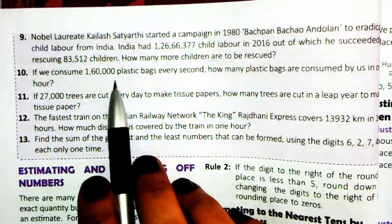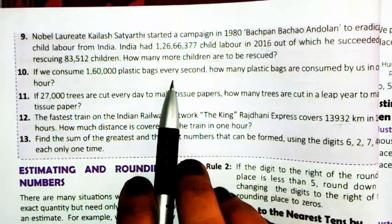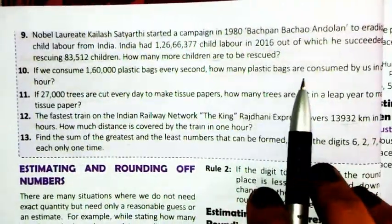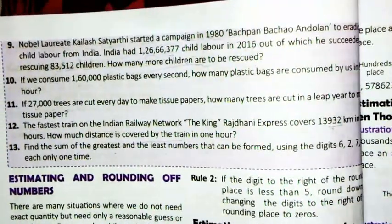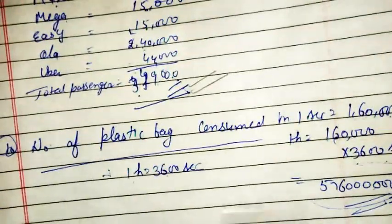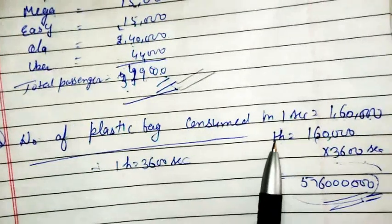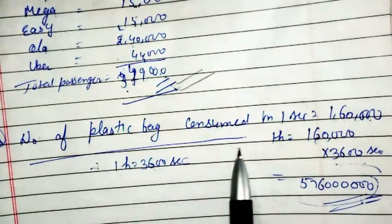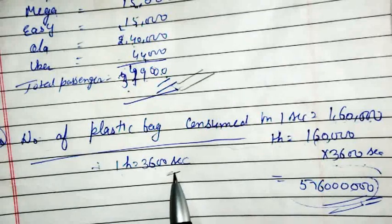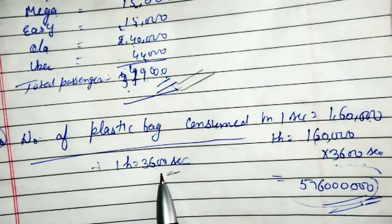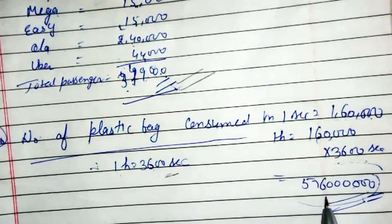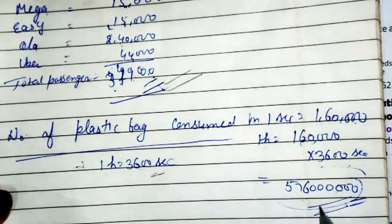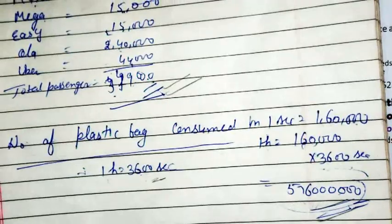Next sum: if we consume 1,60,000 plastic bags every second, how many plastic bags are consumed in 1 hour? We know 1 hour = 3,600 seconds. So we multiply 1,60,000 by 3,600 to get the total number of plastic bags consumed in one hour.